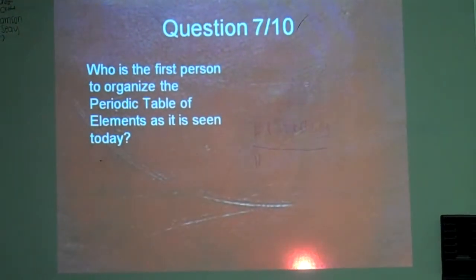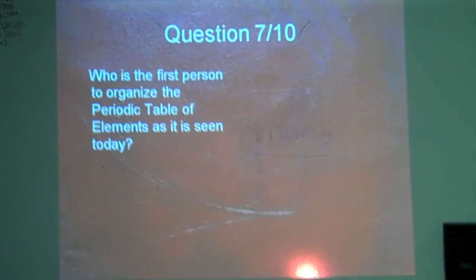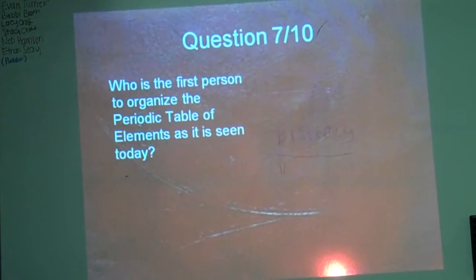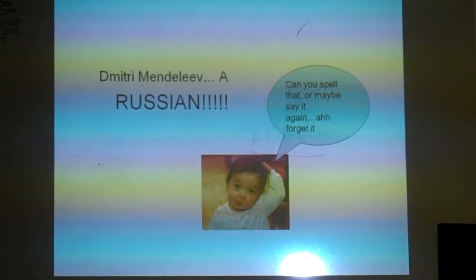Question 7: Who's the first person to organize the periodic table as it is seen today? David. Dmitri Mendeleev. Yep, Mendeleev.